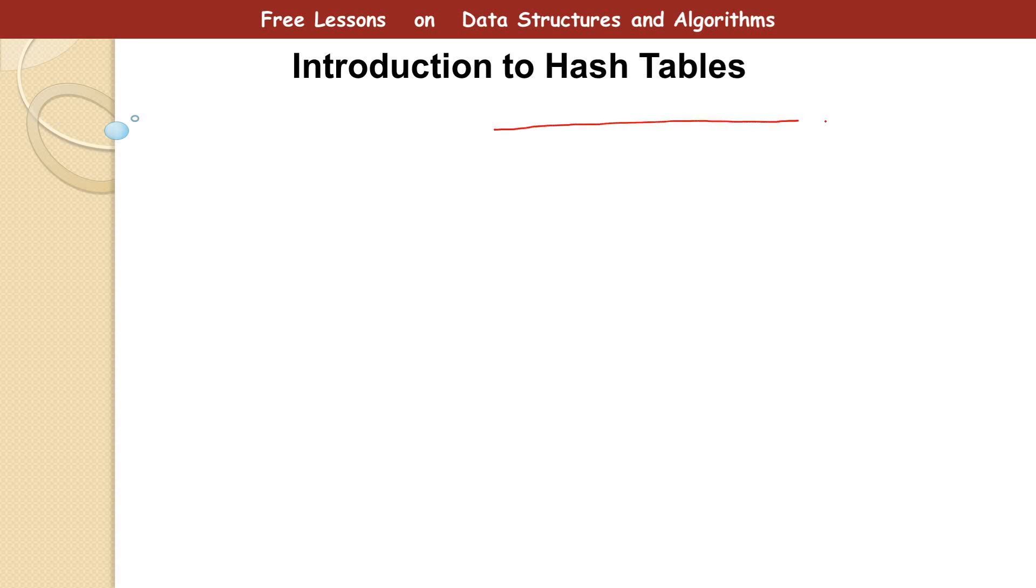So you have indexes holding the positions where you can store data. Let's take for instance, you have a table like this and you want to store data in it. We have 0, 1, 2, 3, 4, 5. So in a hash table you need to store a key and a value pair.